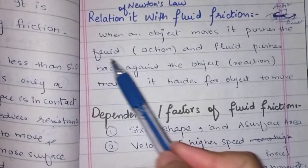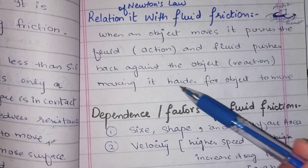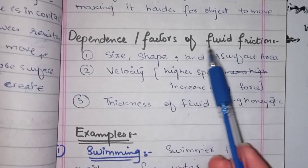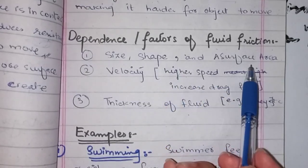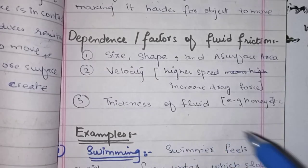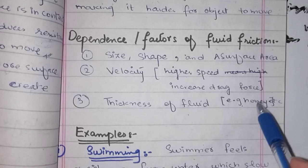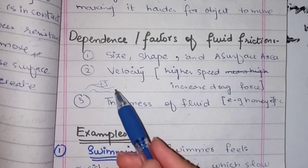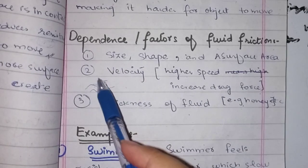The object pushes the fluid, and the fluid pushes back against the object, making it harder for the object to move. This is fluid friction. The factors that affect fluid friction include size, shape, and surface area of the object, as well as the velocity of the object and the thickness of the fluid — for example, honey is thicker and therefore harder to move through.